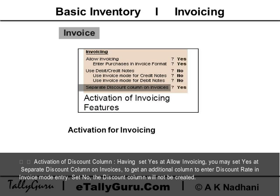For activation of the discount column: having set 'Yes' at 'Allow Invoicing', you may set 'Yes' at 'Separate Discount Column on Invoice' to get an additional column to enter the discount rate in invoice mode entry. If set to 'No', the discount column will not be created.